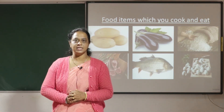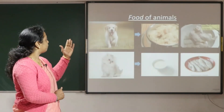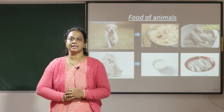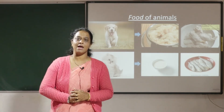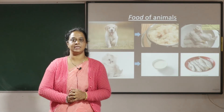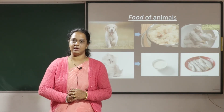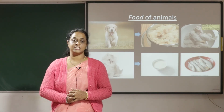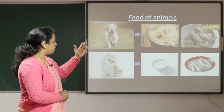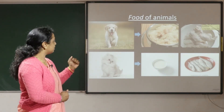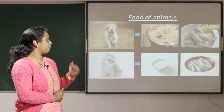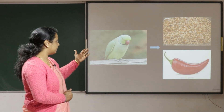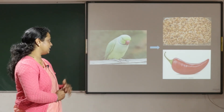Next, we are going to learn about the food habits of animals. Do you have animals at home? Yes, most of them will have animals at home. So what food will you give to that animal? If it is a dog you will give rice and chicken, and if it is a cat you will provide milk and fish. What about a parrot? You will give grain and chillies.